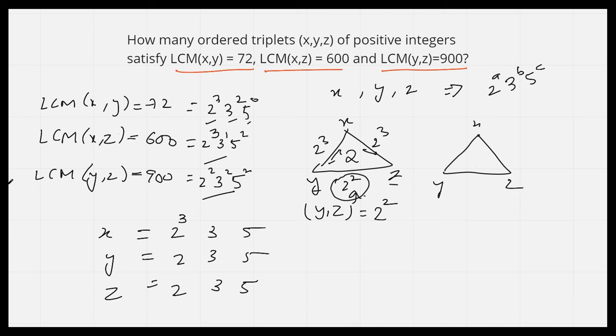Now, let us do the same for the power of 3. Here it is 3² between x and y, 3¹ between x and z, and 3² between y and z. By the same logic, y will have 3². If either x or z had 3², then LCM(x,z) would also have been 3².